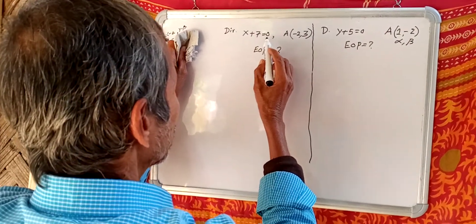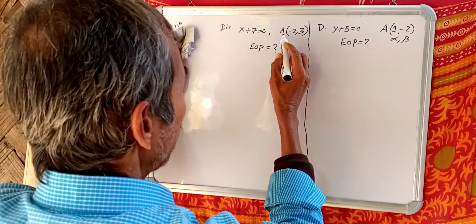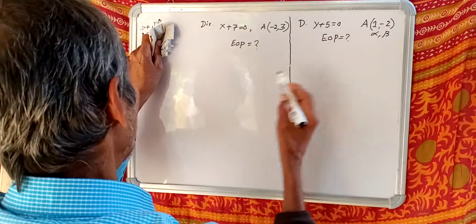Equation directrix X given, vertex A given. In both cases, find EOP (equation of parabola).